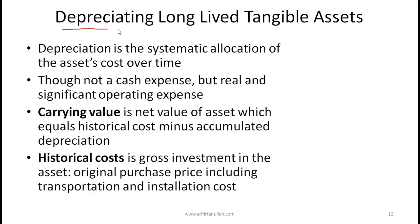Now let's talk about depreciating long-lived tangible assets. Depreciation is the systematic allocation of the asset's cost over time. So you buy an asset worth 10 million, used over 10 years, and you can depreciate or expense it out over 10 years. Though not a cash expense, it is a real and significant operating expense, so depreciation is shown as an operating expense.